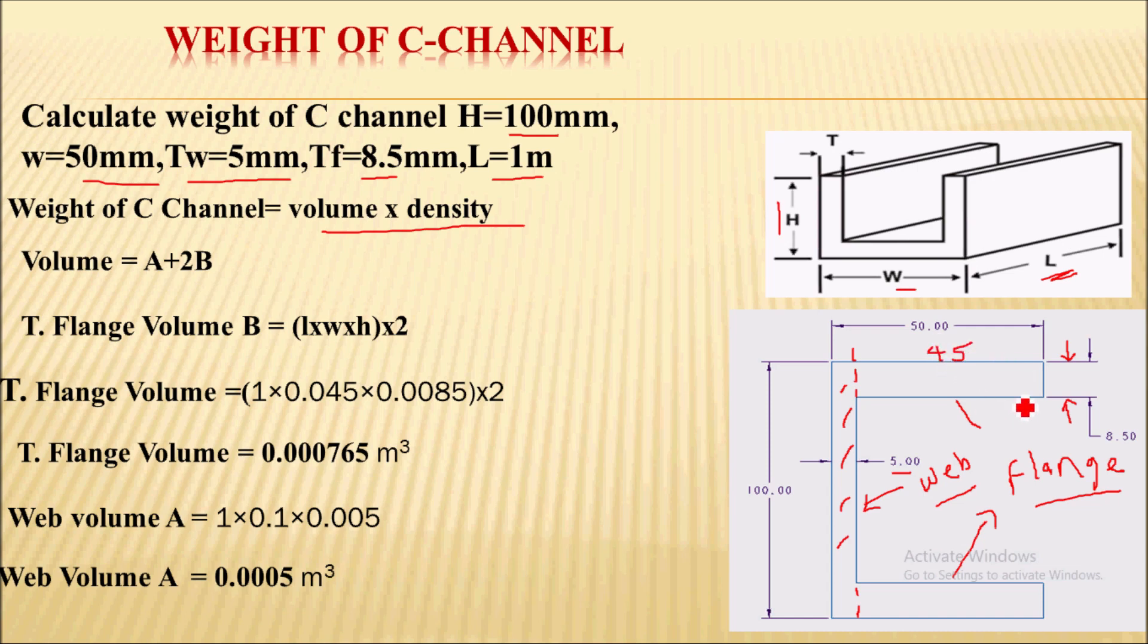Total flange volume B equals length times width times height times 2, as there are 2 flanges. Total flange volume will be: length is 1 meter, width for flange is 45mm converted to 0.045m...